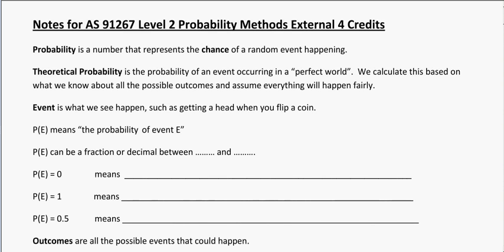So probability, like you probably already know, is the number that represents the chance of a random event happening. When we talk about theoretical probability, this definition is for a probability of an event occurring in a perfect world. We calculate it based on what we know about all the possible outcomes and assume that everything will happen fairly. This is something like flipping a coin. We'd expect to get a head half the time and a tail the other half of the time.